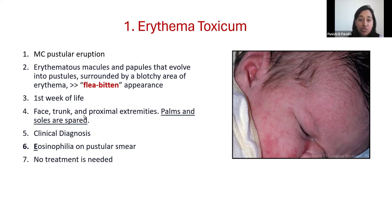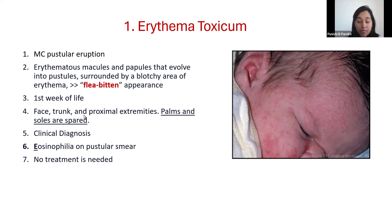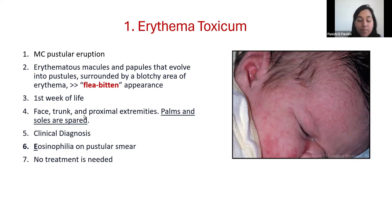The face, trunk, and extremities are commonly involved. Classically the palms and soles are spared — this is important to remember because in a few differentials of pustular skin lesions in newborns the palms and soles are classically involved, but here they're spared. It is a clinical diagnosis so no investigation is required, however if a smear of these pustules is sent for investigation it will show eosinophilia. An easy way of remembering: erythema toxicum — E — you will have eosinophilia.